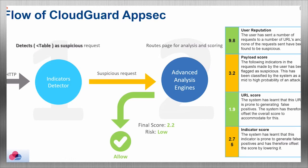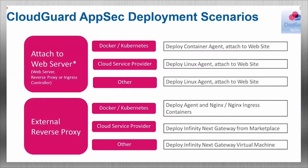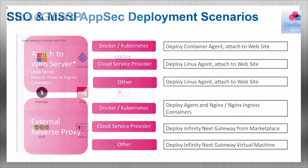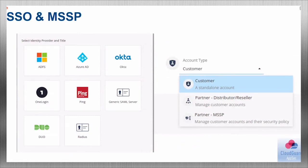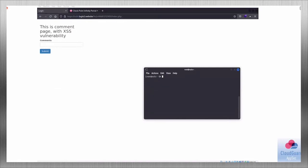For deployment, WAF currently supports a nano client for nginx web server. For other scenarios such as Apache, there is a reverse external proxy appliance called the Infinity Next Gateway, and there is also support for Docker and Kubernetes. Additionally, single sign-on login is supported with providers from a list, and there is also the possibility to act as a security provider.